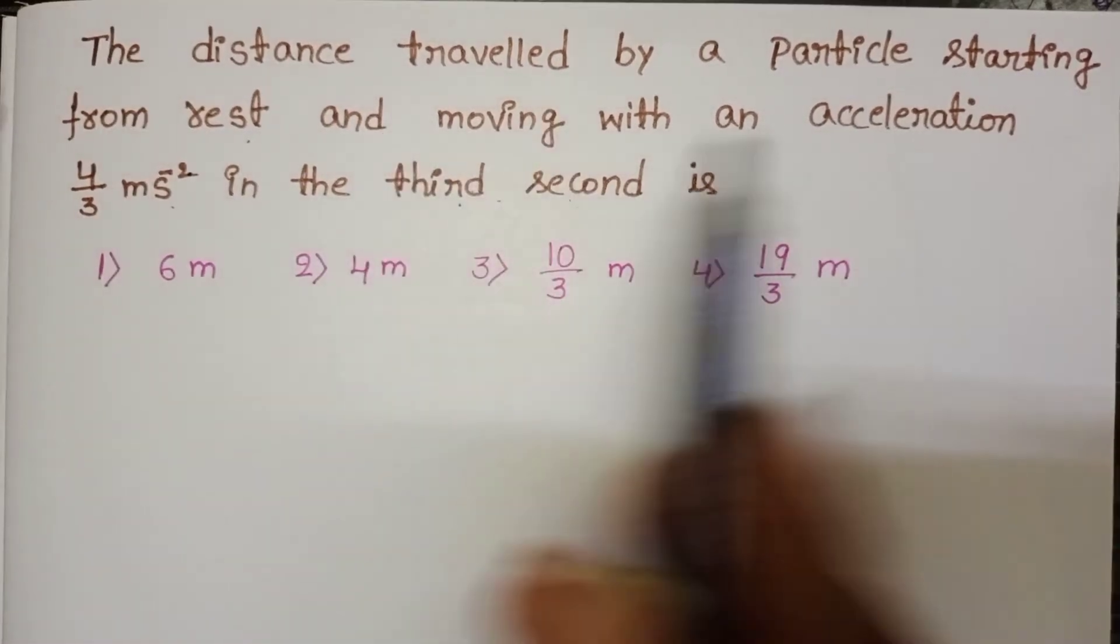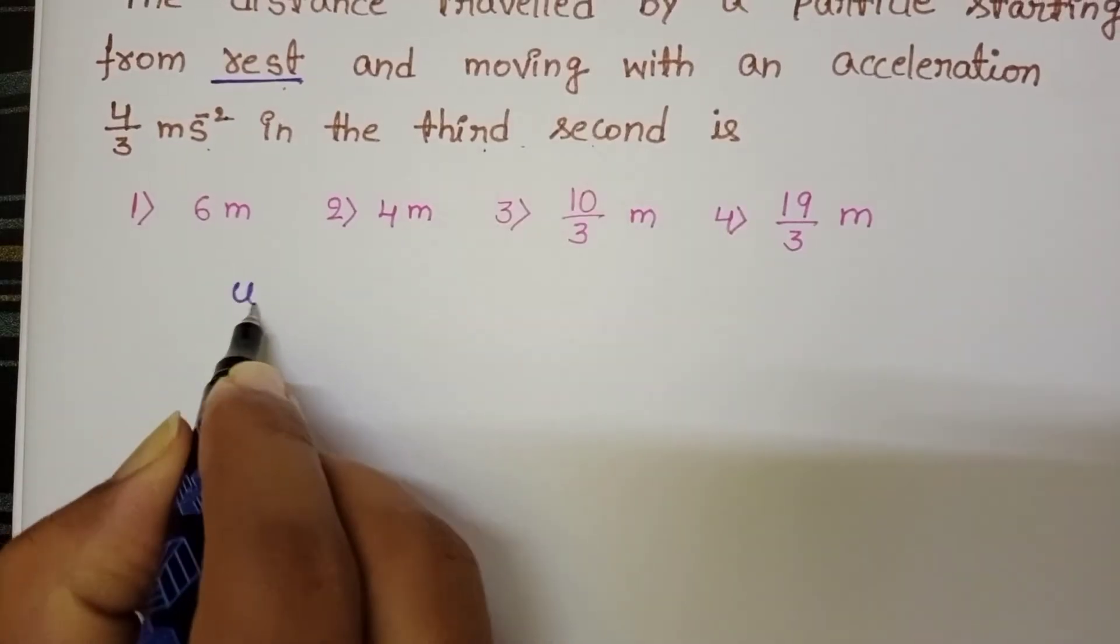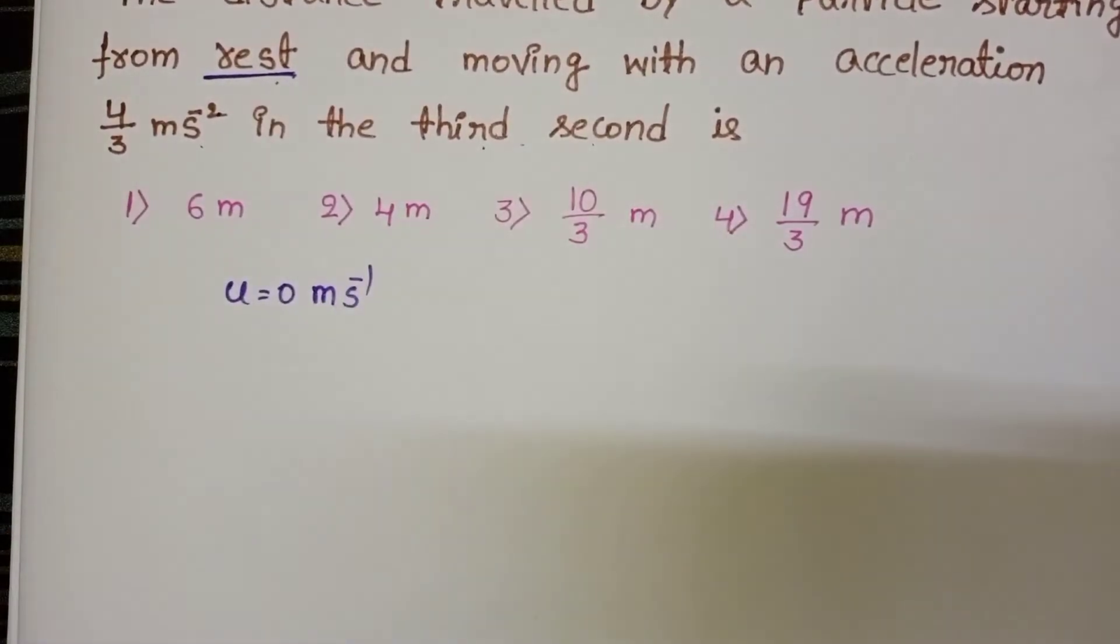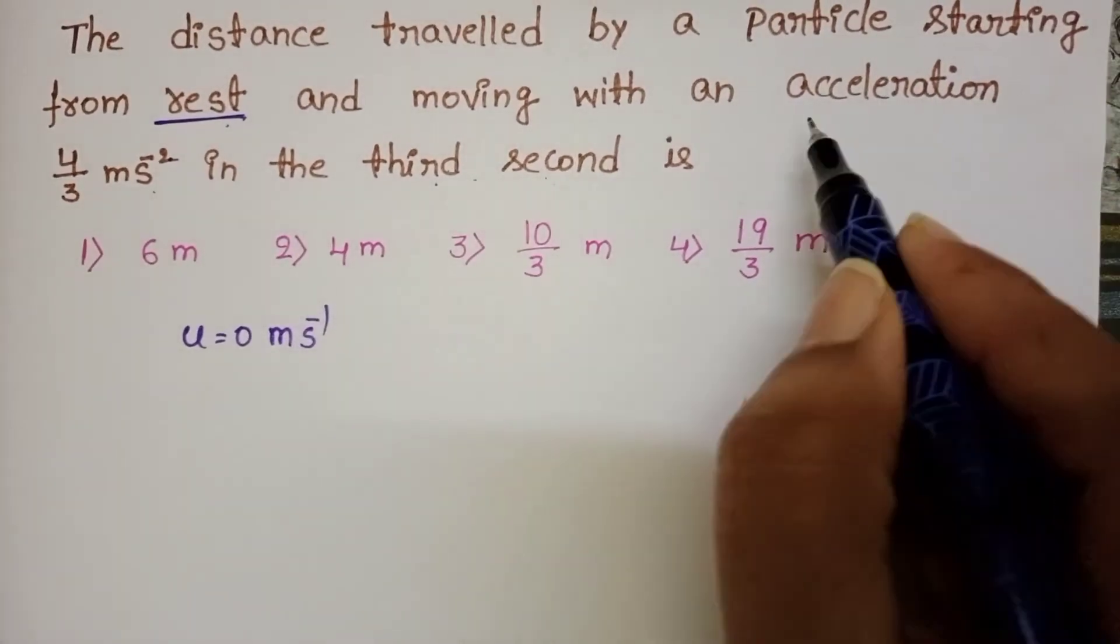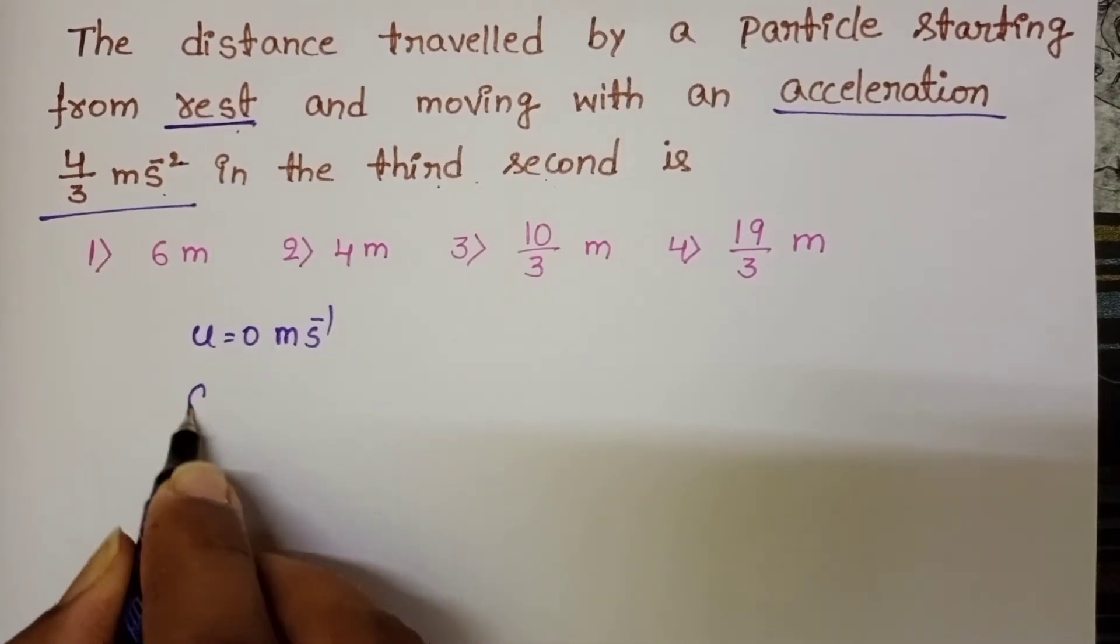Here a particle starts from rest. Initial velocity is equals to 0 meter per second. And this particle is moving with an acceleration of 4 by 3 meter per second square.